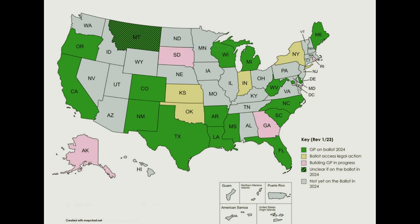There are four more states shown in pink where party building is in progress — states that got into trouble with the national and were disaffiliated. Alaska nominated Jesse Ventura as their presidential nominee in 2020 even though the national convention nominated Howie Hawkins, so they got disaffiliated. Rhode Island even more egregiously nominated Joe Biden as their Green Party presidential candidate and was disaffiliated. In Georgia, there were amendments to their platform regarded as transphobic, so they were disaffiliated as well. Those four states may end up on the ballot if they can resolve their problems with the national.